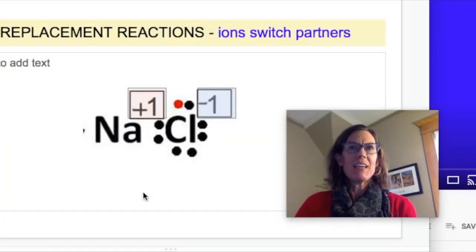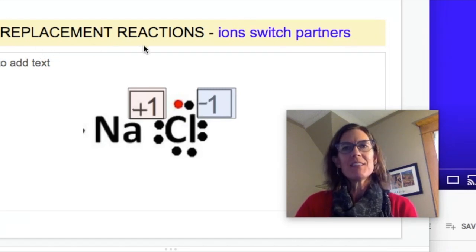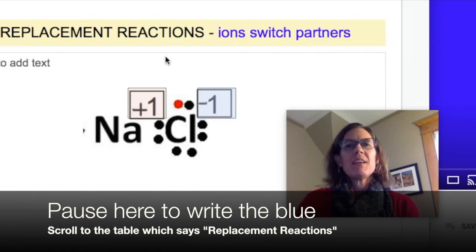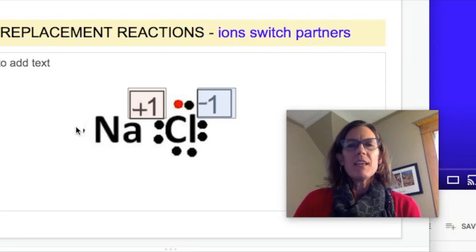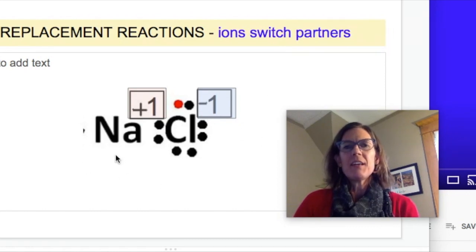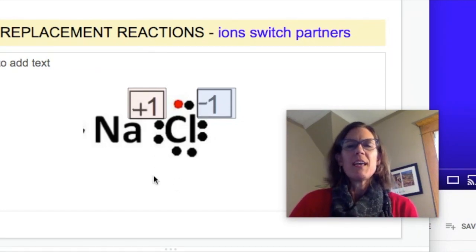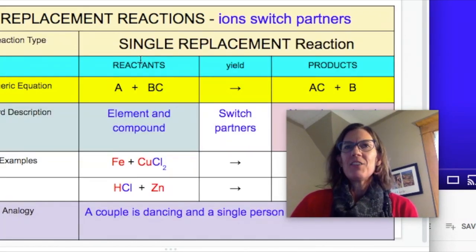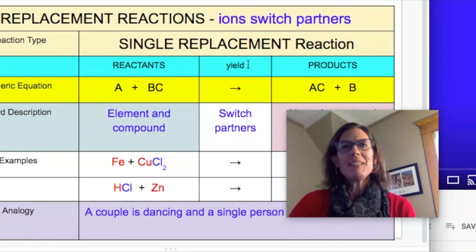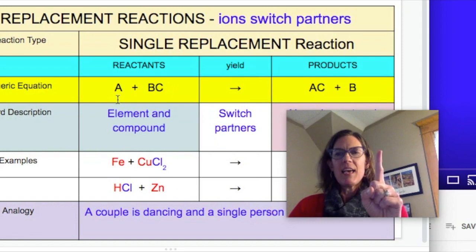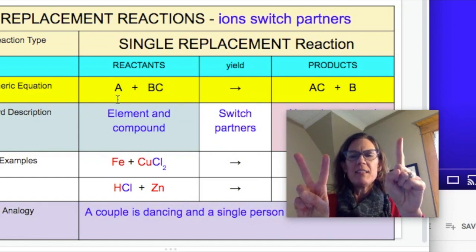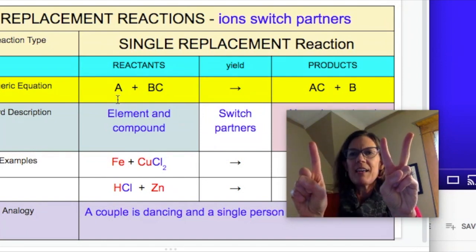The next two kinds of reactions are kind of alike in that they are both considered replacement reactions where ions switch partners. So, look at this sodium chloride bond here. We're going to think of the sodium and the chloride, a cation and an anion, as partners, because they bond because opposites attract. But what if this bond here broke and a new bond formed with a different partner? The first type of replacement reaction we're going to look at is the single replacement reaction. And in a single replacement reaction, the reactants are an element and a compound. The element, the single one, switches places with one of the ions of the compound.